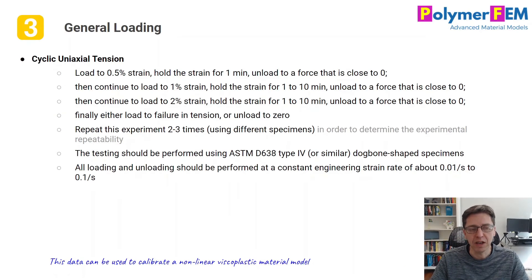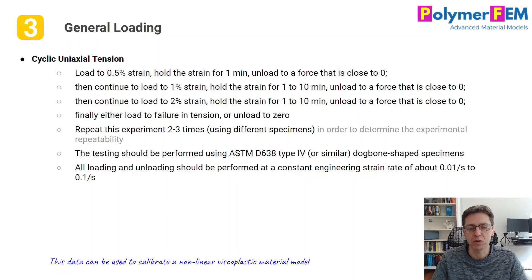The most general case for a continuum model involves a cyclic tension test. Load to a small strain — a fraction of a percent — then hold briefly, because thermosets relax when given the chance; they are viscoplastic, not non-linear elastic. Then unload to a low force and reload to a larger strain. Repeat this cycle two or three times, either to failure or unload to zero if you're interested in residual strain predictions. Repeat tests two or three times for repeatability, using dog bone specimens if possible. This data is sufficient to calibrate a non-linear viscoplastic material model capturing time dependence, unloading behavior, and strain effects.